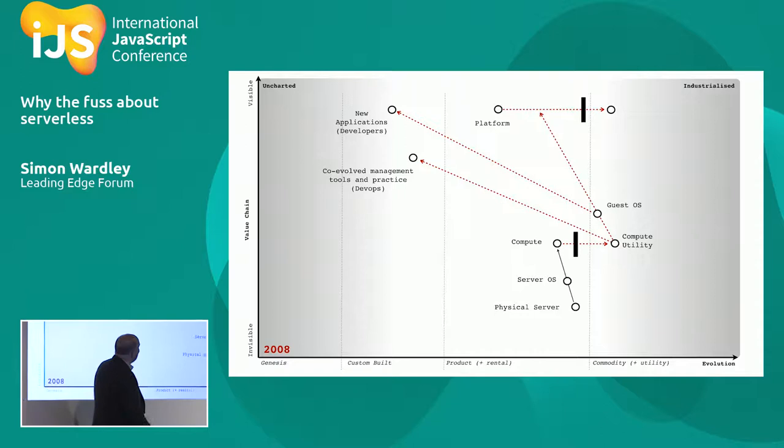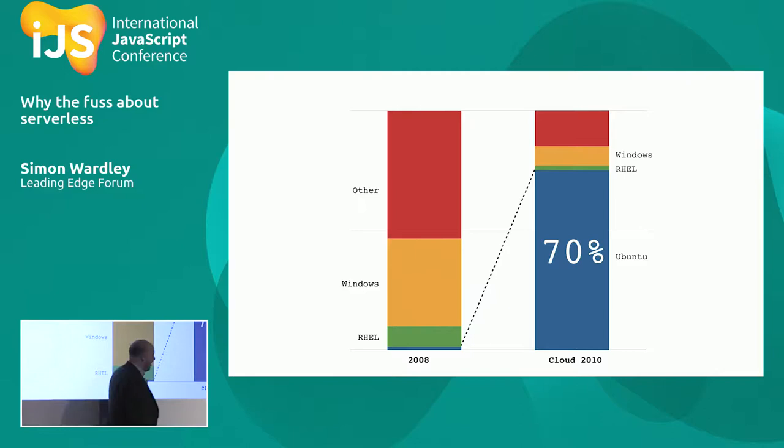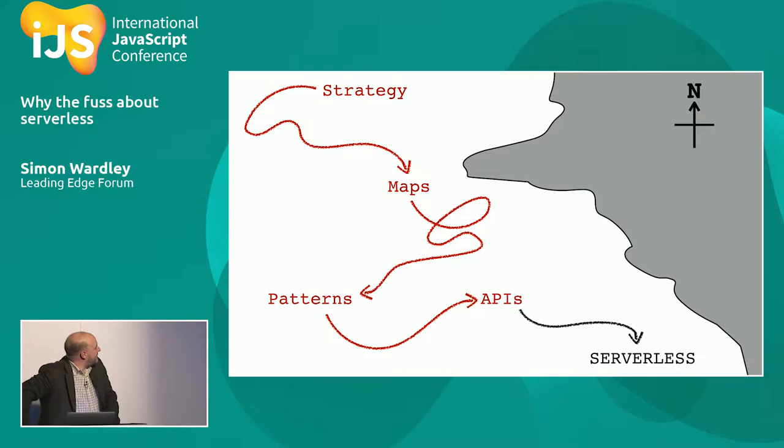Then I went to Canonical. Anybody heard of Ubuntu? We had a map — we mapped it out in 2008 and used the map to attack the space. We were 2% of the operating system market; half a million installs later, 18 months later, we were 70% of all cloud. Great fun. And then I started doing stuff with government.